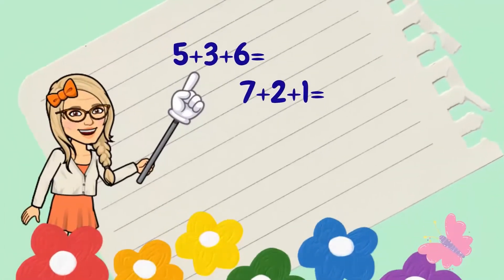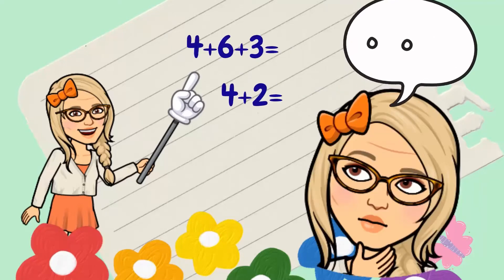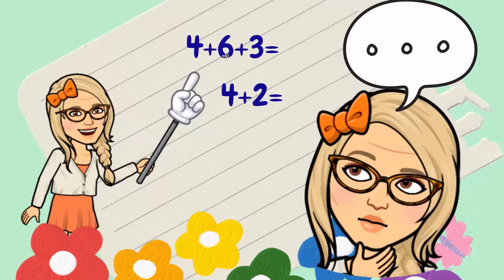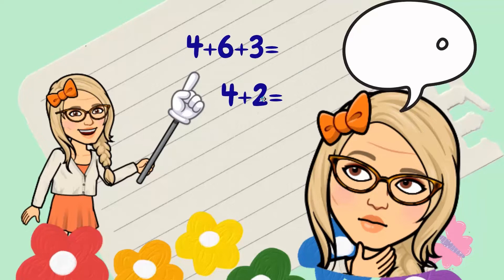First of all, let's look at these two addition sentences. We already know what addition is, right? This is an addition sentence: 5 plus 3 plus 6, 7 plus 2 plus 1. Those are addition sentences. The same as this one: 4 plus 6 plus 3, 4 plus 2. All those are addition sentences.